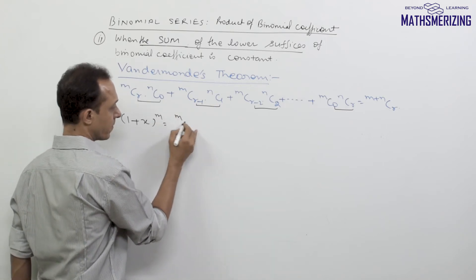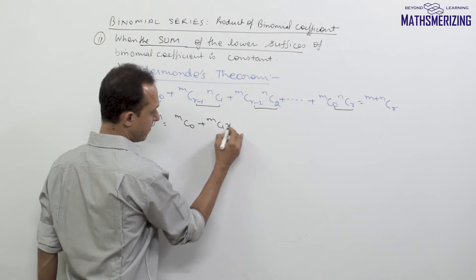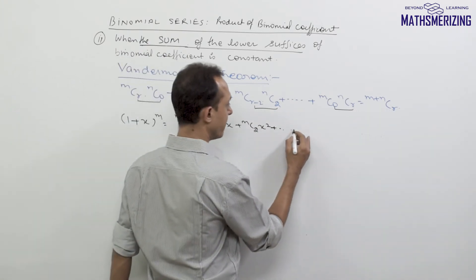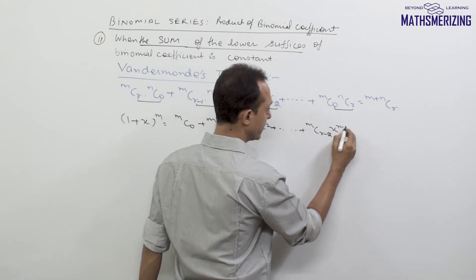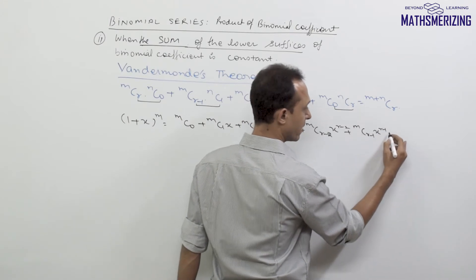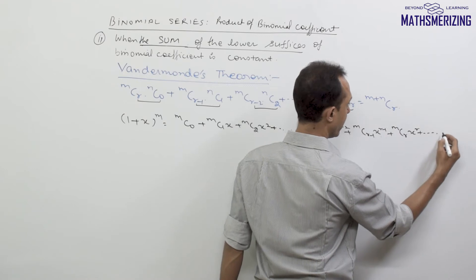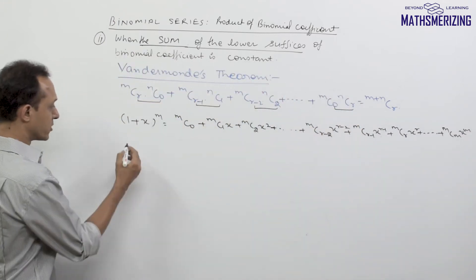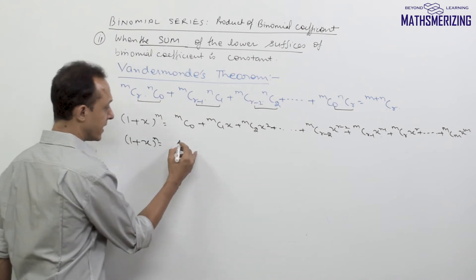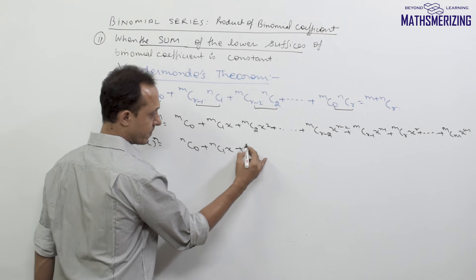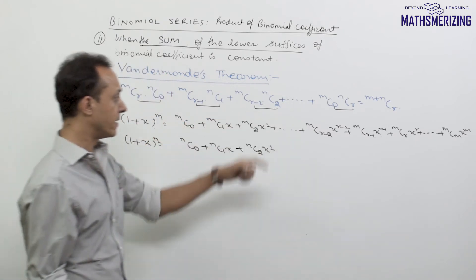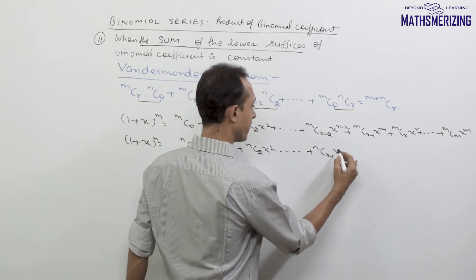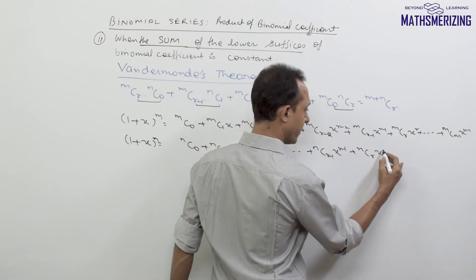We write the expansion of (1+x)^m as mC0 + mC1·x + mC2·x² + ... + mCr·x^r + mC(r-1)·x^(r-1) + ... up to mCm·x^m. We also write (1+x)^n as nC0 + nC1·x + nC2·x² + ... + nC(r-1)·x^(r-1) + nCr·x^r.